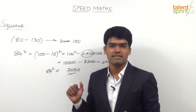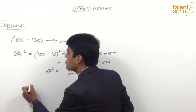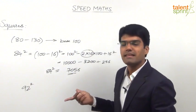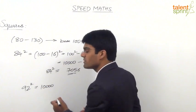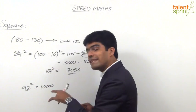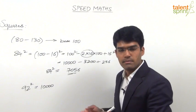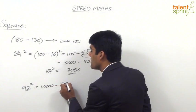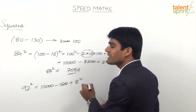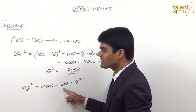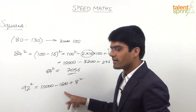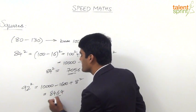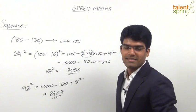Let us take a few more examples. We have to find out 92 squared. 92 should be taken as 100 minus 8. So the first term is 10,000 — always fixed. Because it is minus 8, we take minus 1,600 (remember it must be doubled: minus 8 into 2 is minus 16, so minus 1,600). Plus 8 squared, which is 64. So 10,000 minus 1,600 is 8,400, and 8,400 plus 64 gives 8,464. So 92 squared equals 8,464.